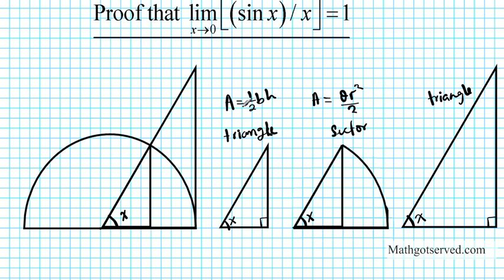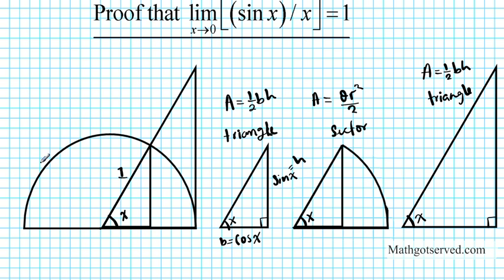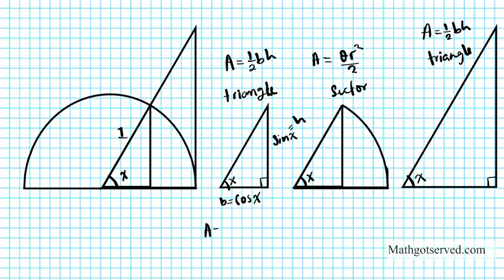Let's look at the first triangle. Since we have a unit circle, the radius is 1. In the unit circle the hypotenuse is 1, so the opposite side is sin x and the adjacent side is cos x. The adjacent (cos x) is the base of the triangle and sin x is the height. So the area of the first shape is one half base times height, which is one half cos x sin x.